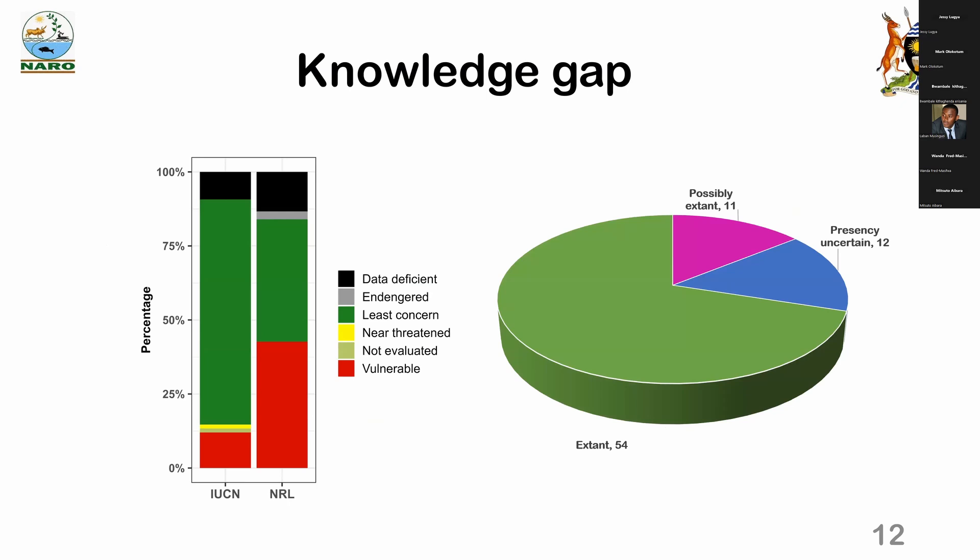When we come to the knowledge gaps, we have fish species whose data is deficient or not known. According to the national red list, we have very many species which are vulnerable. According to the global red list, we still have fish species that are not evaluated.